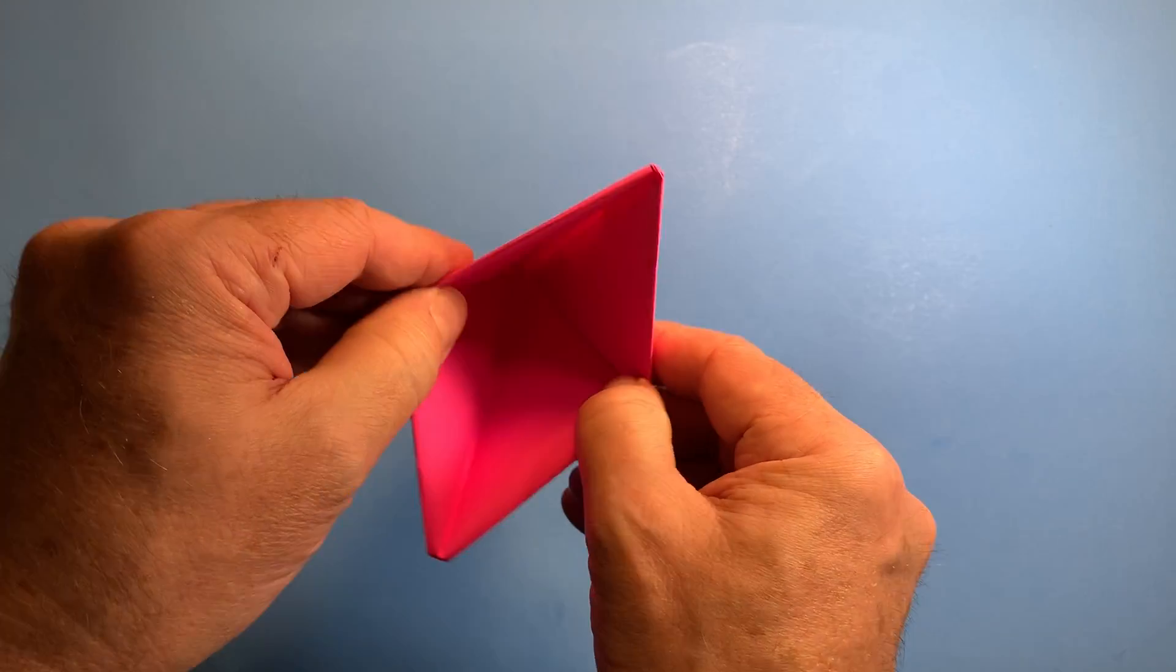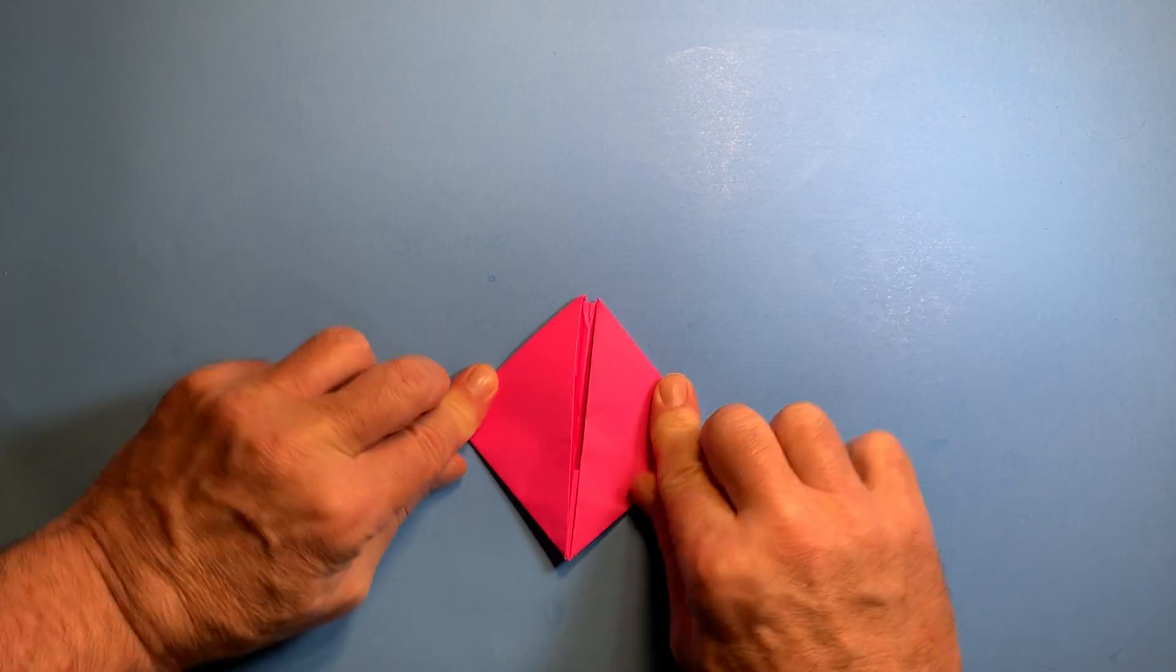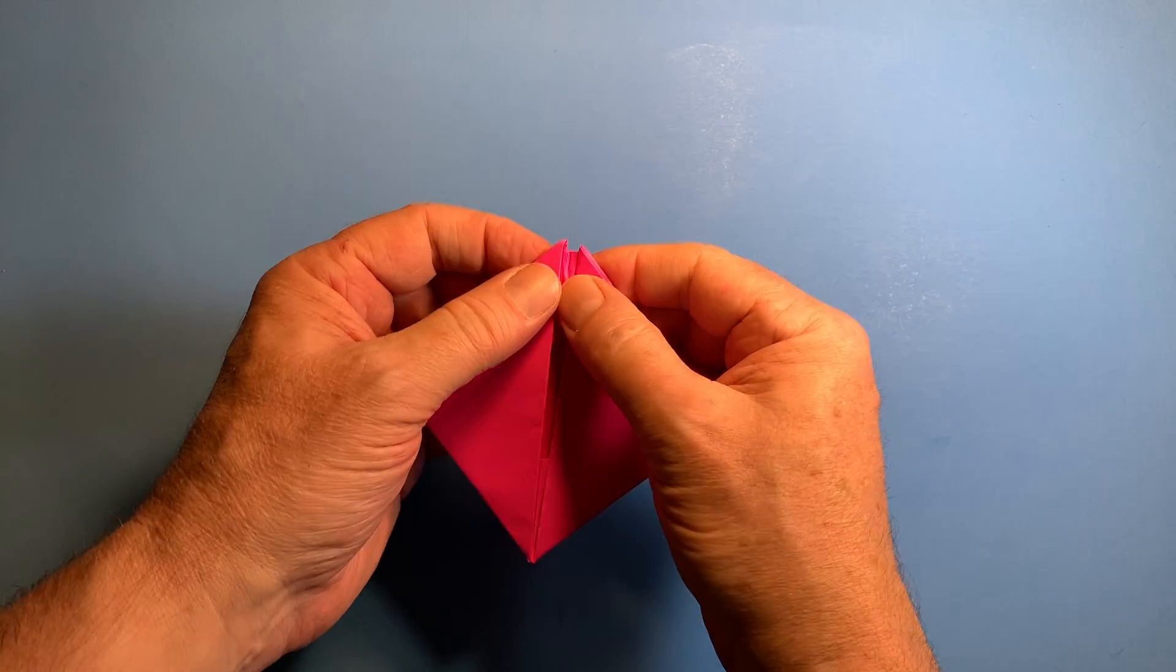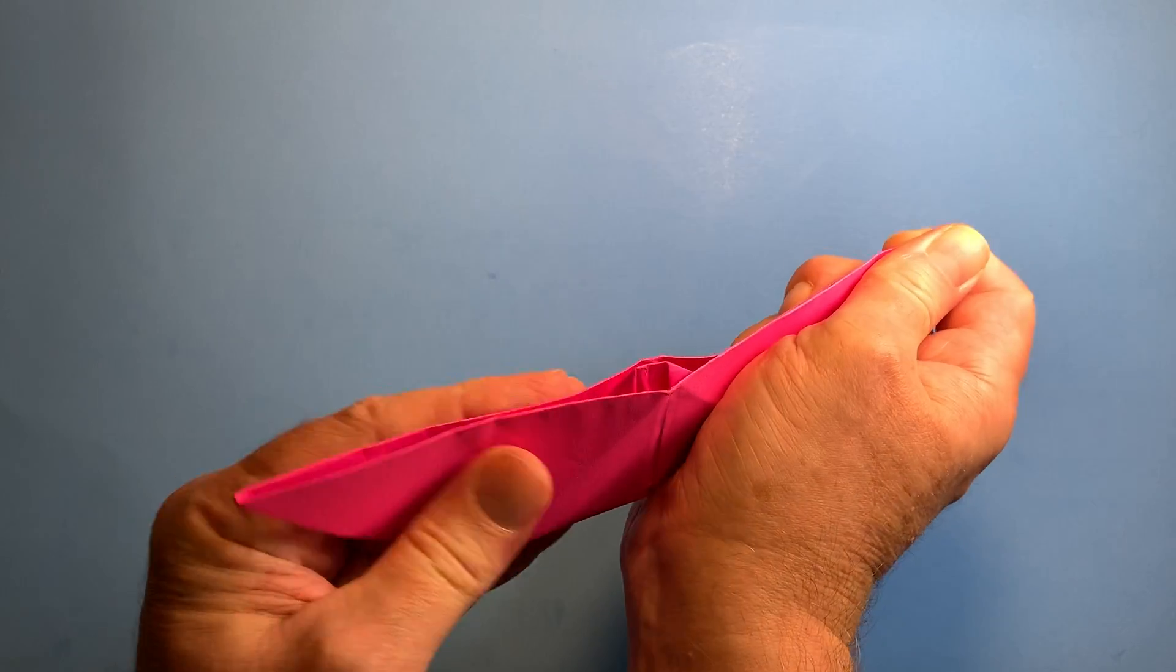But we're going to open it all the way, crease it, and now we're just going to magically grab these corners, pull it down, and you got yourself a nice little paper boat that actually floats in water.